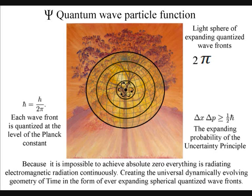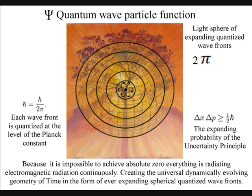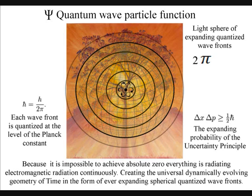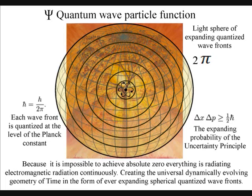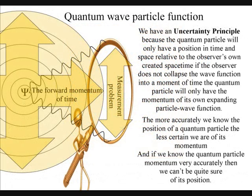This can be observed either as a point in space over a period of time, or as an area of space at a moment in time, but not as both. Therefore, we have the measurement problem of quantum mechanics.